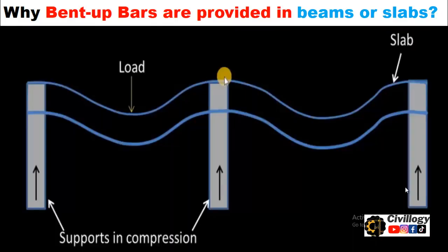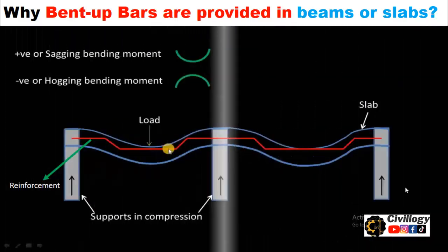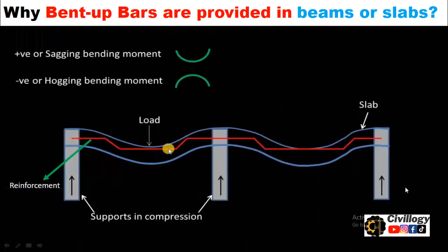The same is the case with slabs. Slabs also undergo deformation similar to a beam when load is applied. To overcome these deformations, providing steel in this manner is proved to be very effective and economical. I hope you have now understood the concept of providing crank bars.